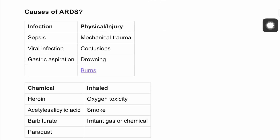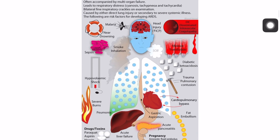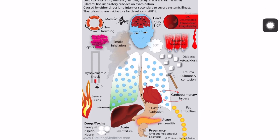Causes can be classified into chemical injury, mechanical or physical injury, and infection. Chemical causes include heroin, salicylic acid, barbiturates, or aspiration pneumonia. Mechanical trauma includes contusions, drowning, burns, and sepsis. Viral infections such as COVID can also cause ARDS. Other causes include malaria, smoke inhalation, massive blood transfusion, DKA, lung contusions, fat embolism, aspiration pneumonia, acute pancreatitis, severe sepsis, liver failure, and drugs such as aspirin and heroin.